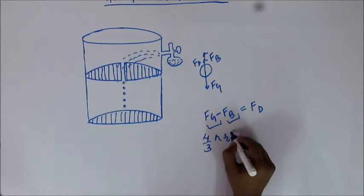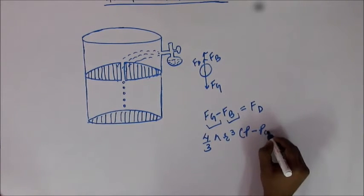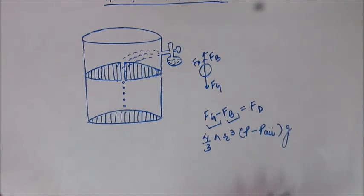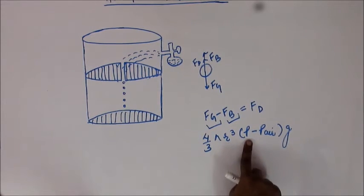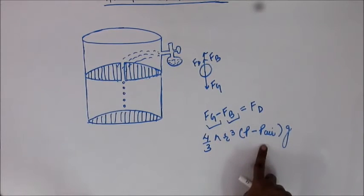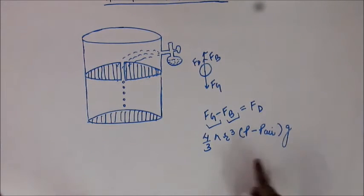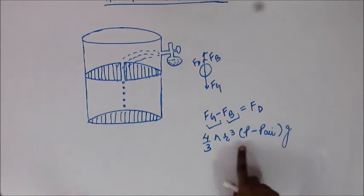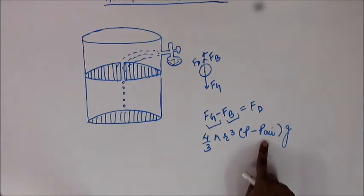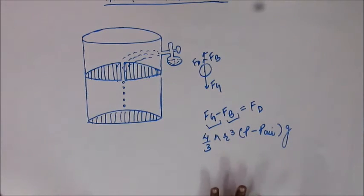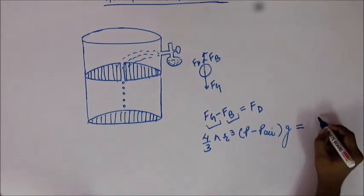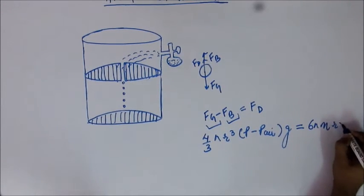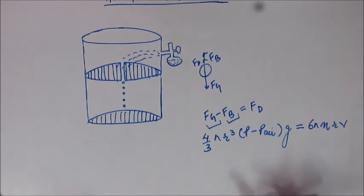At terminal velocity, Fg minus Fb equals the drag force. We can write: Fg minus Fb = (4/3)πr³(ρ_oil − ρ_air) × g. Here, Fg = m × g = volume × density × g = (4/3)πr³ × ρ_oil × g, and Fb equals the weight of fluid displaced = (4/3)πr³ × ρ_air × g. This must equal the drag force, given by Stokes' Law as 6πηrv.